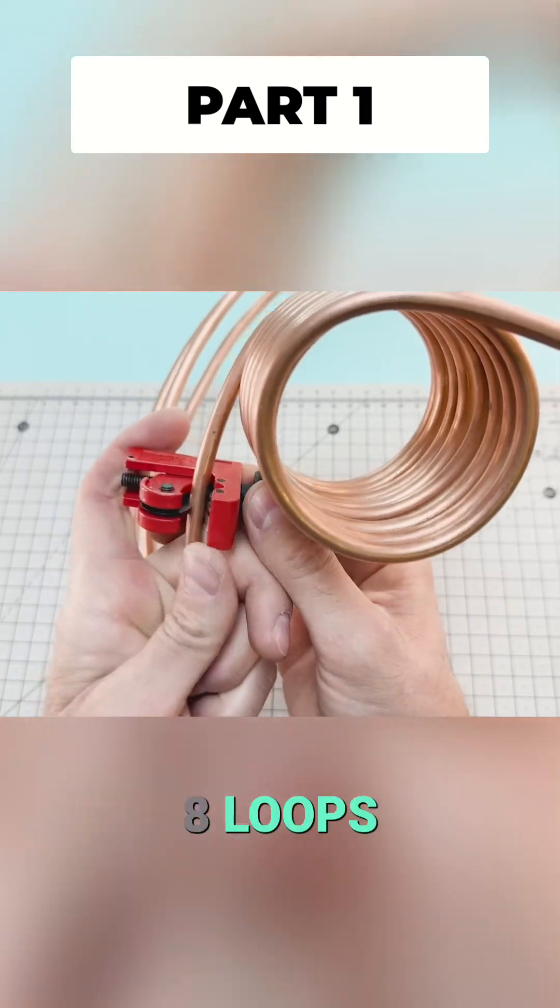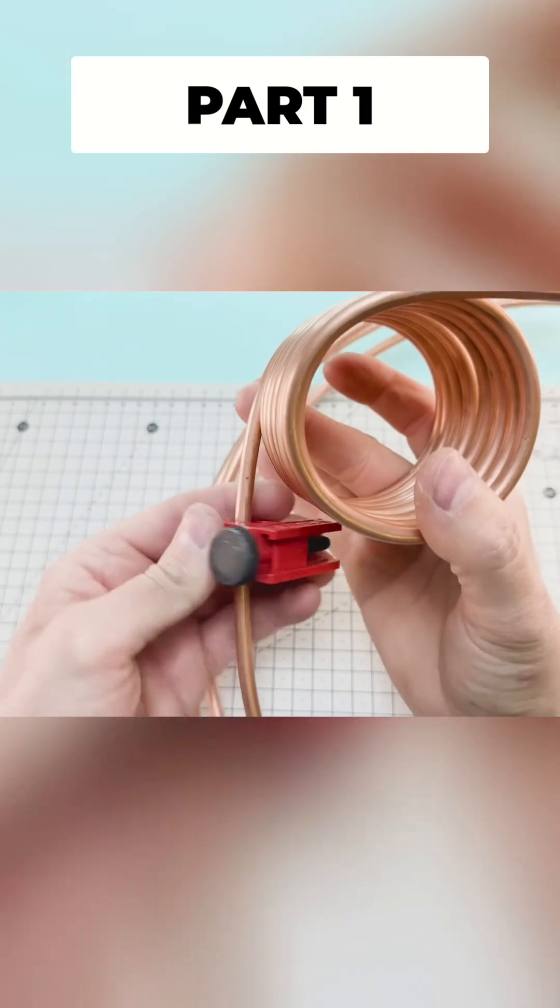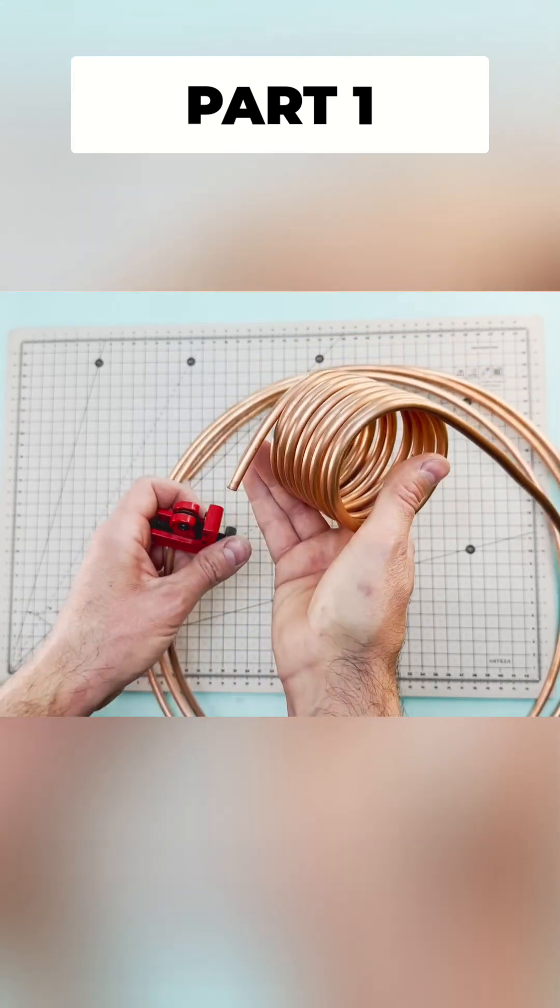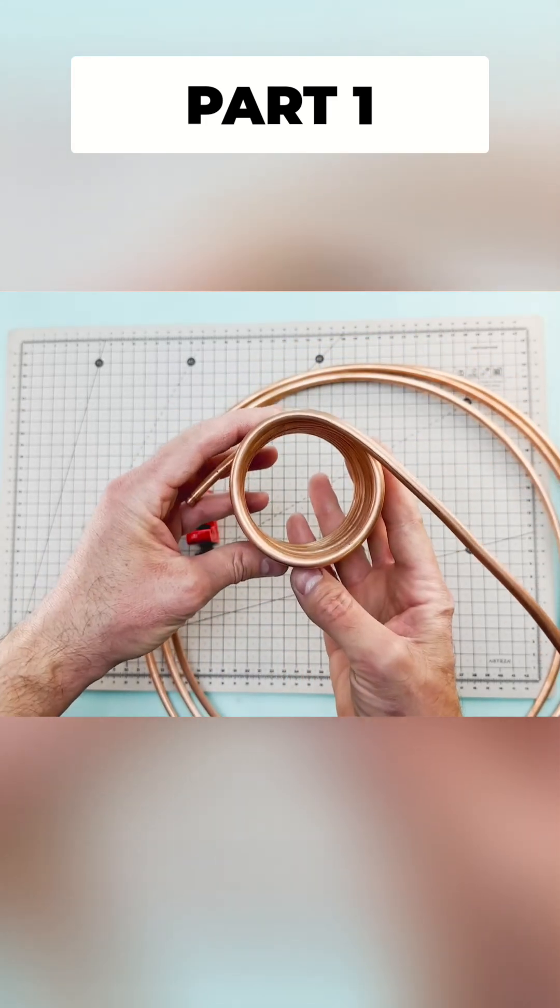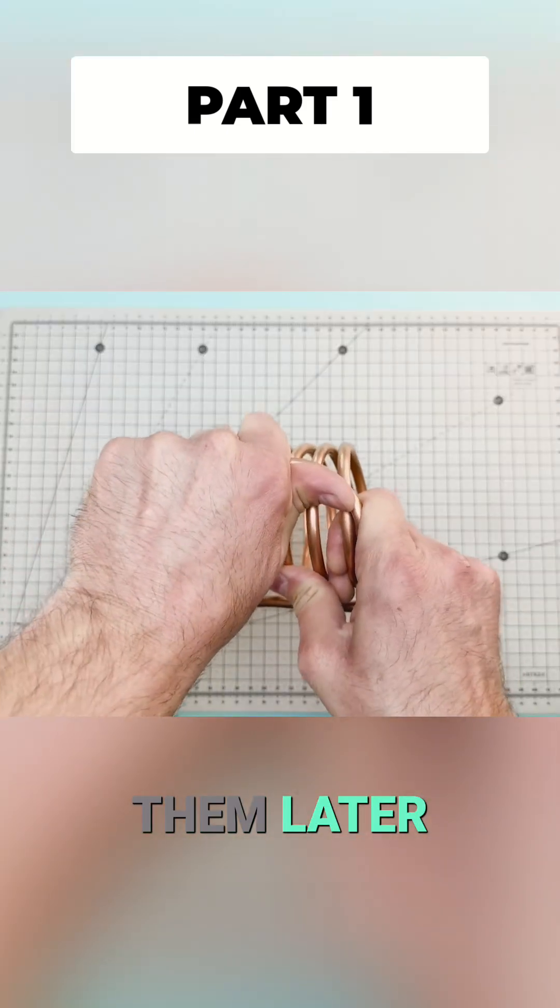Once we have about eight loops we proceed to cut the tube and slightly bend the ends so we can connect them later on.